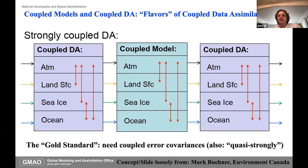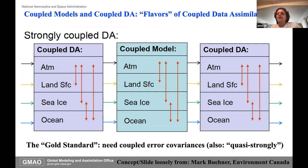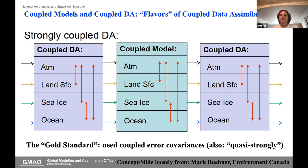The strongly coupled gold standard has the data assimilation, the model, and everything all running coupled. But for this we need coupled error covariances, and that is no small task.